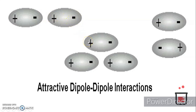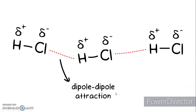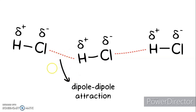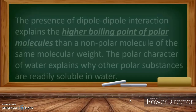Negative is attracted to positive, and positive is attracted to negative — that is the attractive dipole-dipole interaction. A very good example is hydrogen chloride (HCl), or hydrochloric acid. The dipole-dipole attraction between HCl molecules involves the negative end of chloride and the positive end of hydrogen attracted to one another, interconnected by this dipole-dipole force.